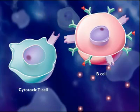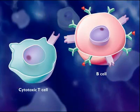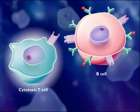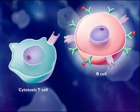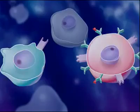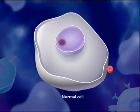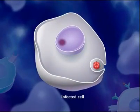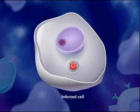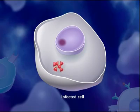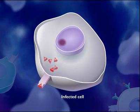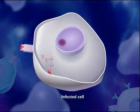The immune response from this point follows two paths — one using cytotoxic T-cells and one using B-cells. Normal cells of the body that become infected can also digest some of the pathogens and display antigen fragments on their cell surfaces.